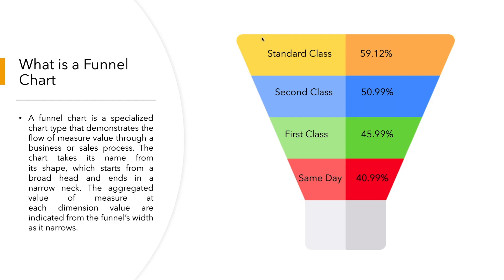As you can see at the top, we have a standard class ship mode which percentage is 59.12. As we go down, we can see how the percentage is decreasing, and we can see the different stages of ship mode decreasing as we go down the hierarchy. So that's what a funnel chart is.